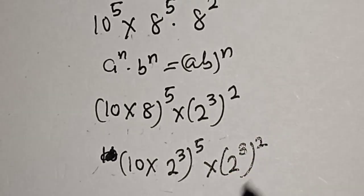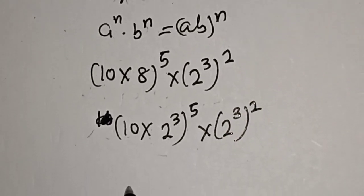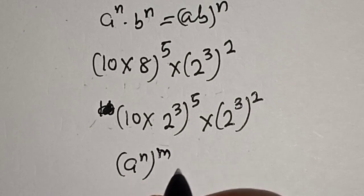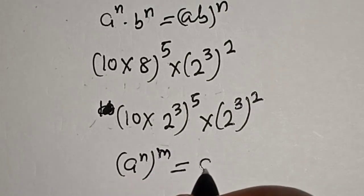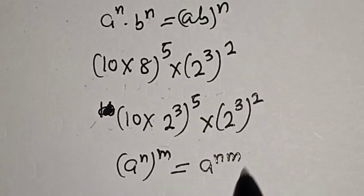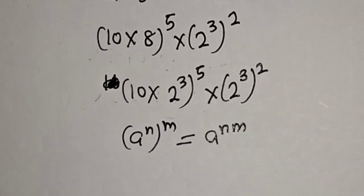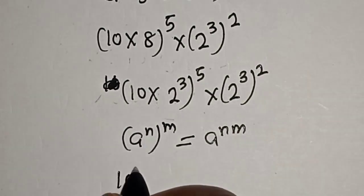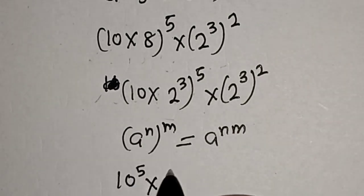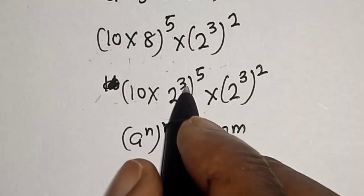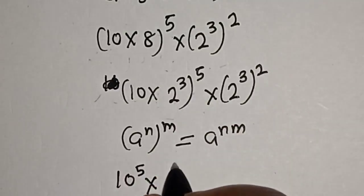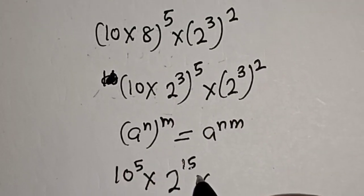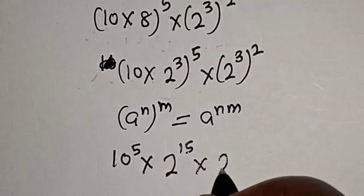Take note of this rule: a raised to power m, all raised to power n, is equal to a raised to power n times m. Applying this, we get 10 raised to power 5 multiplied by 2 raised to power 3 times 5, which is 15, multiplied by 2 raised to power 3 times 2.